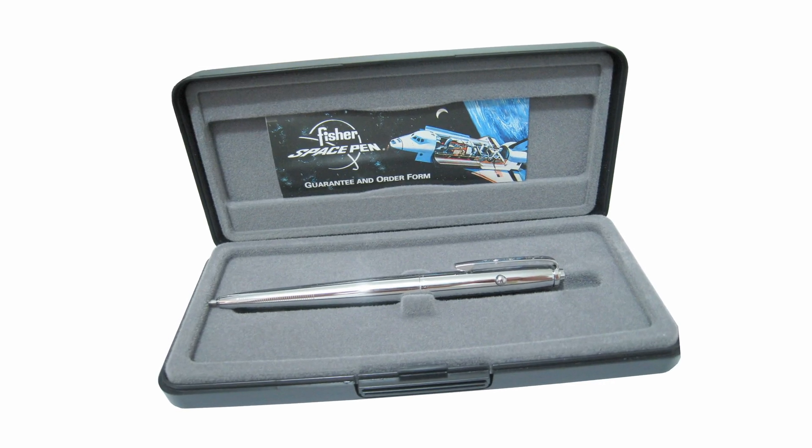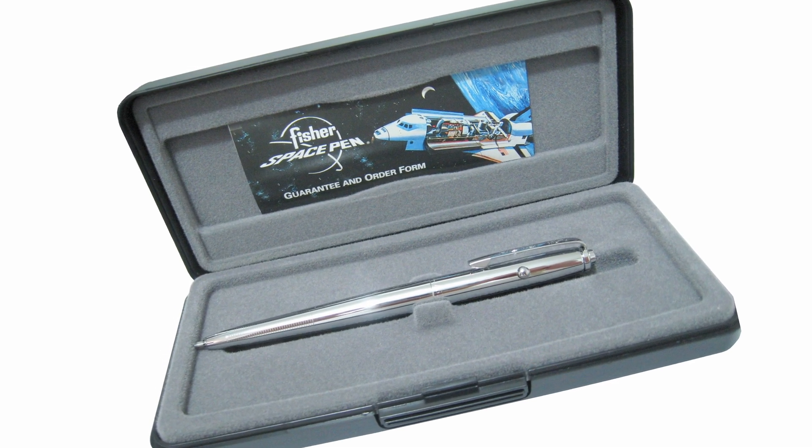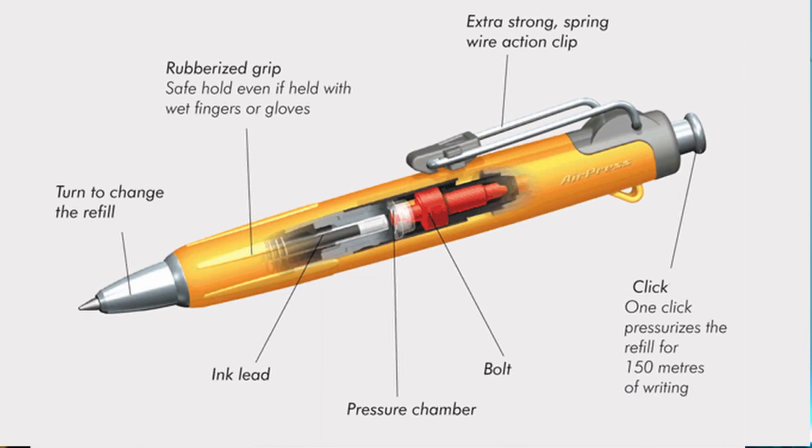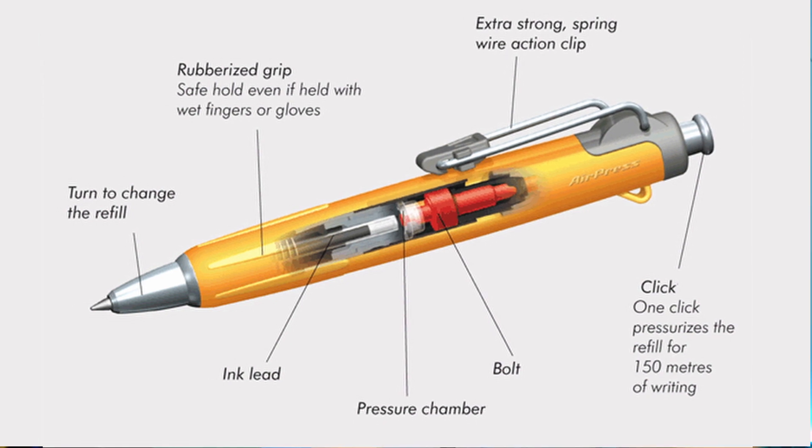So in the 1960s, NASA spent a million dollars developing a space pen because normal pens would not work in zero gravity. The ink inside the cartridge would just fly around and the pen wouldn't write in space. So they spent a million dollars developing a special pen with a pressurized nitrogen capsule that would allow you to write in space. Meanwhile, the Soviets decided to go for a simpler solution — why not just use a pencil? And that is a story of complexity versus simplicity.